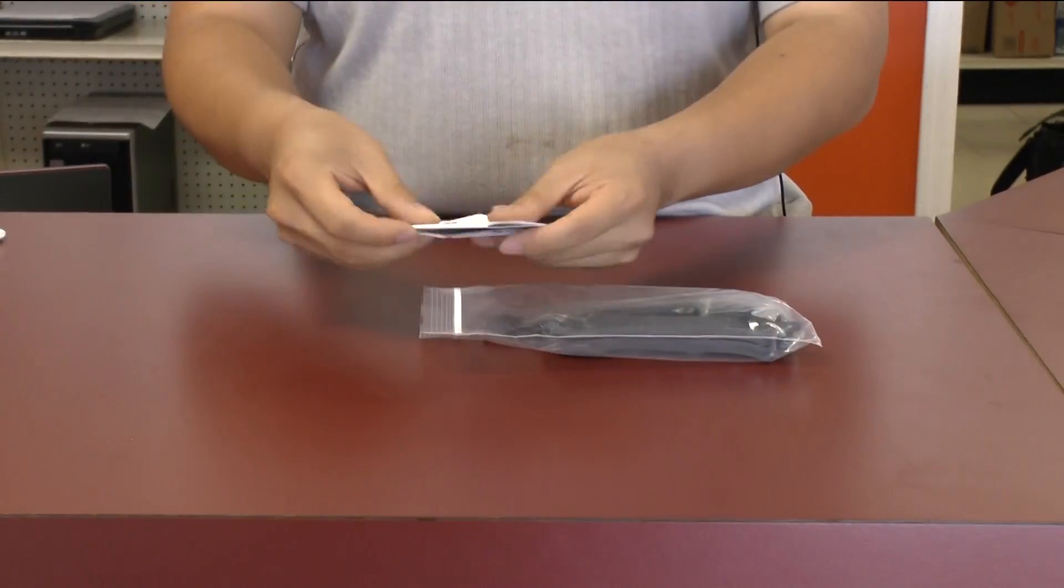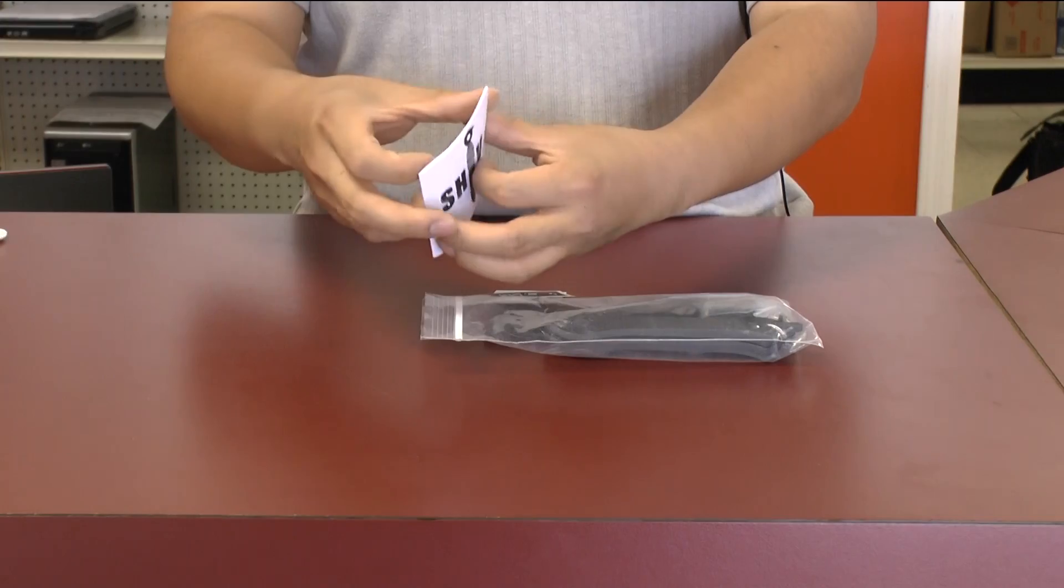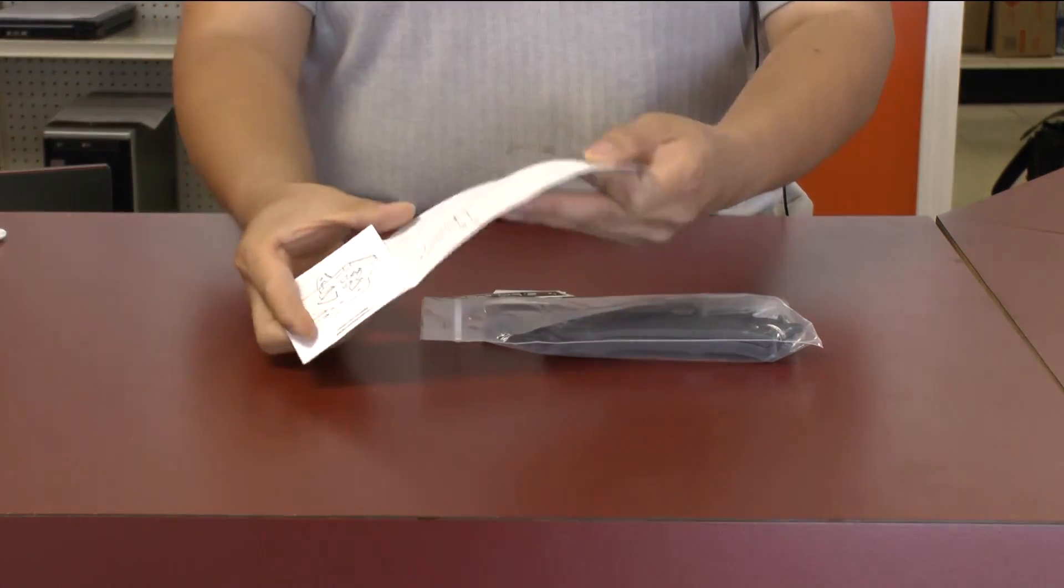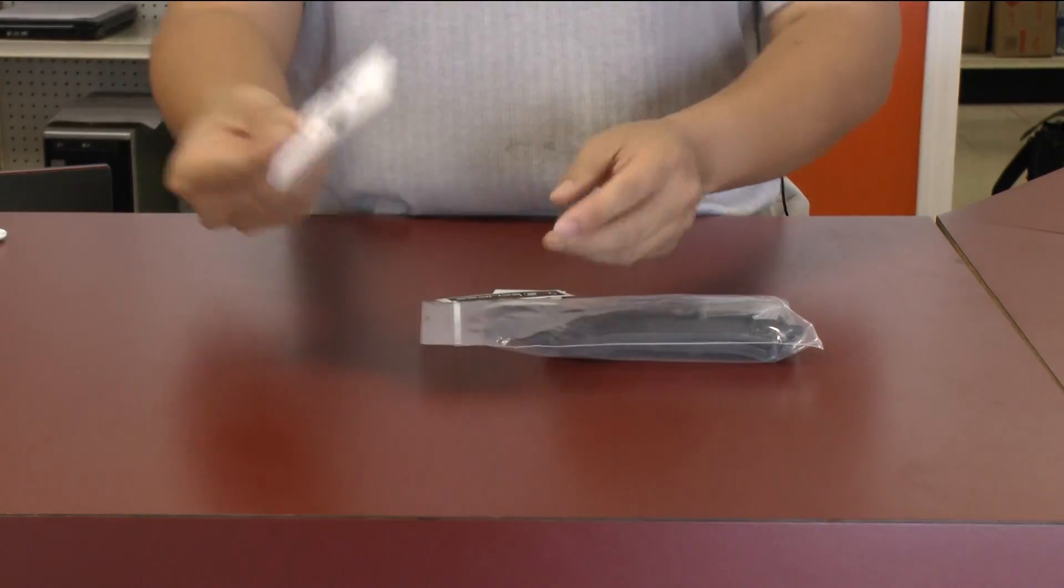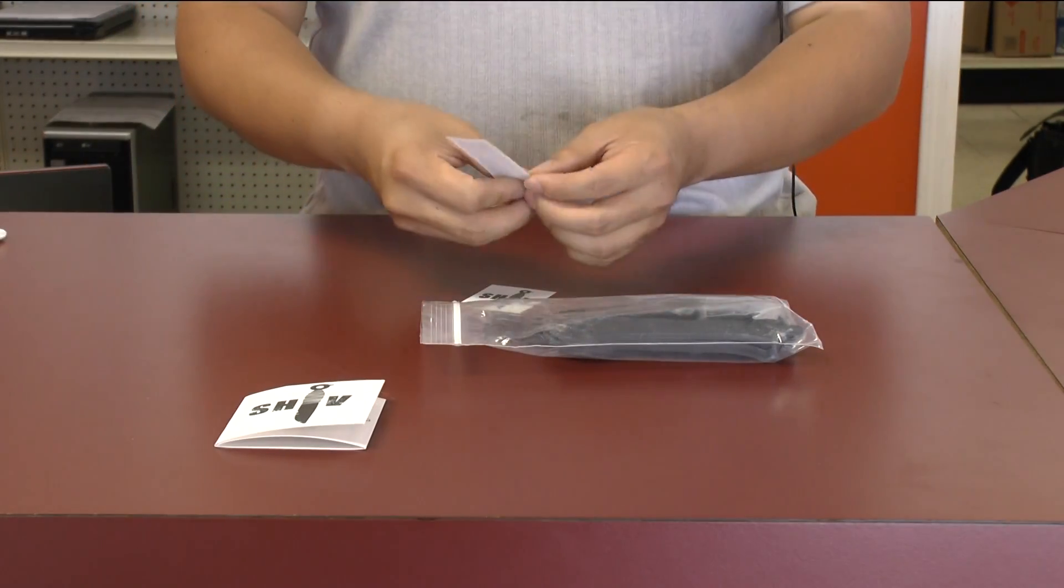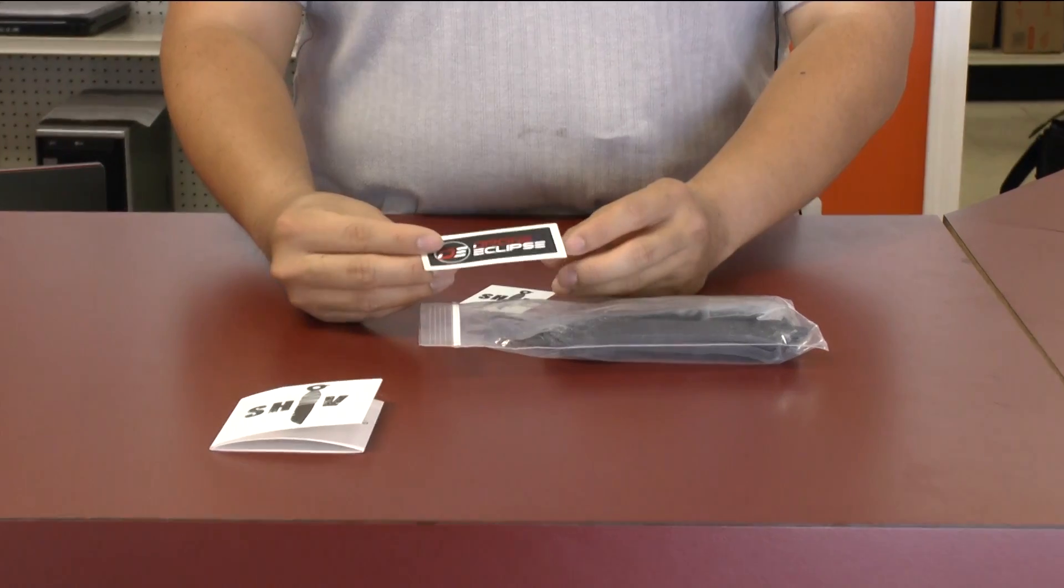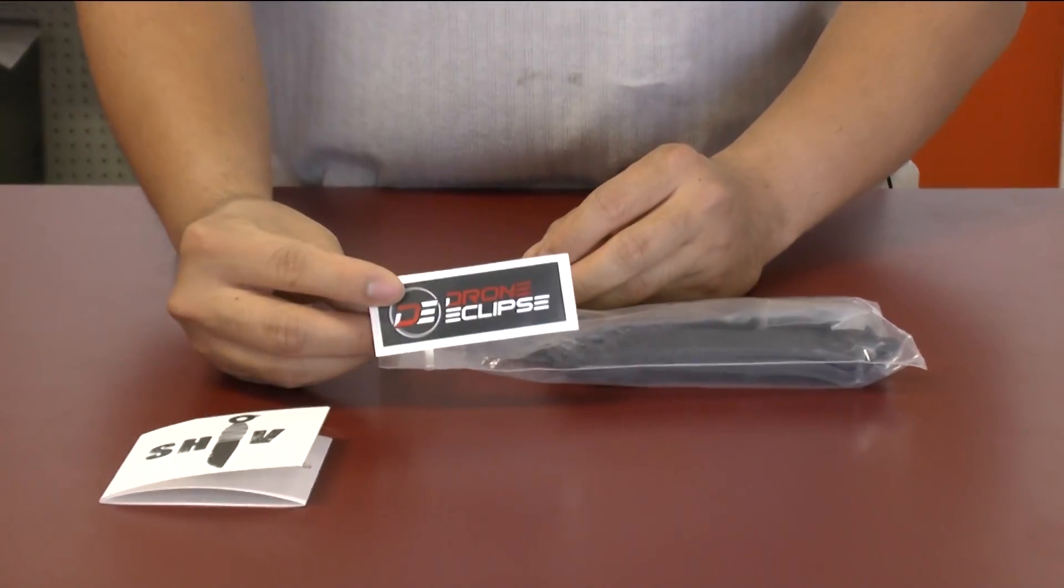First few things are the stickers. So this is actually an instruction booklet. I thought it was a sticker. So this is the instructional booklet, it comes with it. That's nice. Almost every frame that I have ever seen doesn't come with an instruction booklet. So kudos to Drone Eclipse for actually having one.